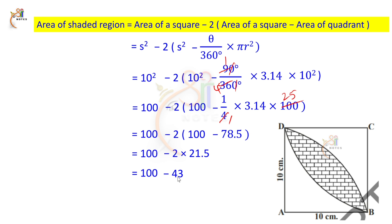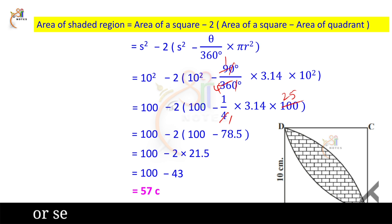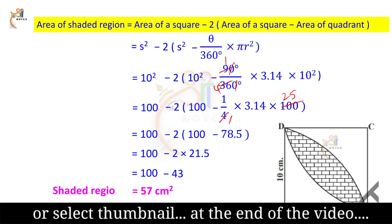So 100 minus 43 = 57. The area of the quadrant subtracted from the square leaves 21.5. Two such areas give 43. Subtracting 43 from the total square area of 100 gives us the remaining shaded area. Therefore the shaded region is equal to 57 square centimeters. This is the answer.